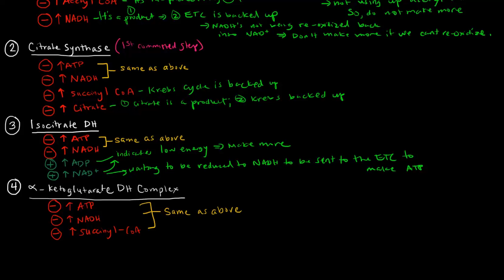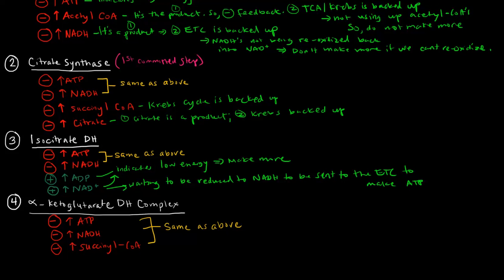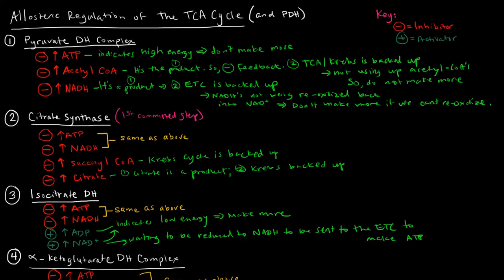One important thing to note is that just because something logically makes sense as an allosteric effector doesn't mean that it will be one. For example, isocitrate dehydrogenase is not allosterically inhibited by high levels of succinyl-CoA — it would make sense if it were, but it isn't. So just because something could potentially make sense as an allosteric effector doesn't necessarily mean that it will be one.